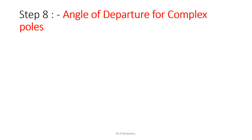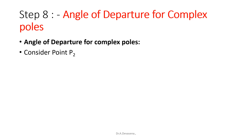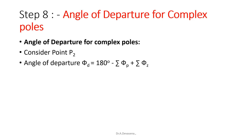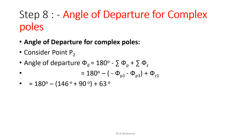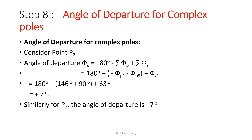Now we are going to calculate the angle of departure, because this problem has complex poles. The angle of departure φ_d = 180° - (sum of φ_p) + (sum of φ_z). Considering point P2 at s = -3 + 2j: φ_d = 180° - (146° + 90°) + 63° = +7°. Similarly, for point P3 at s = -3 - 2j, the angle of departure is -7°.